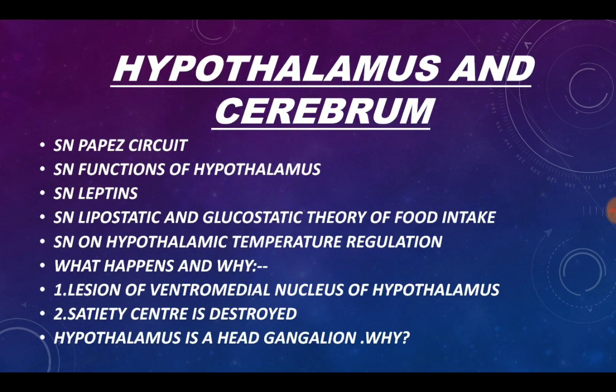Moving on to the chapter on hypothalamus and cerebrum — this is not that important a chapter, however questions can be framed on the hypothalamus. Short note on Papez circuit is important. Short note on functions of hypothalamus is very very important. Short note on leptin, lipostatic and glycostatic theory of food intake is not important. Short note on hypothalamic temperature regulation is very important. What happens and why if lesion of the ventromedial nucleus of hypothalamus occurs or if the satiety center is destroyed can be asked. Hypothalamus as a head ganglion — you have to explain why.